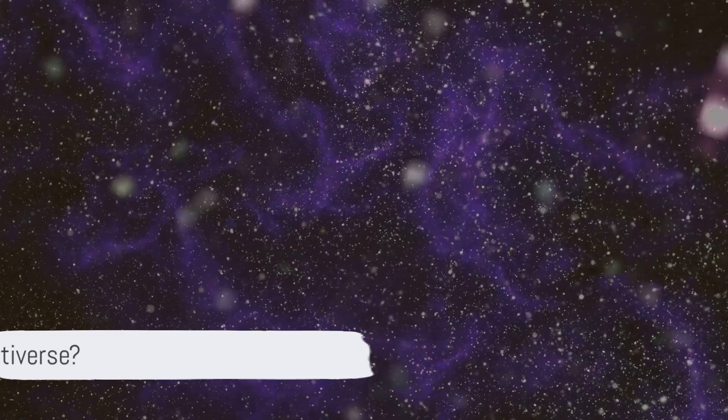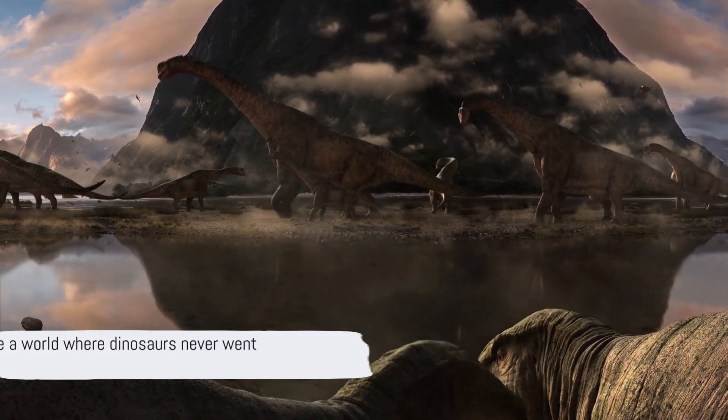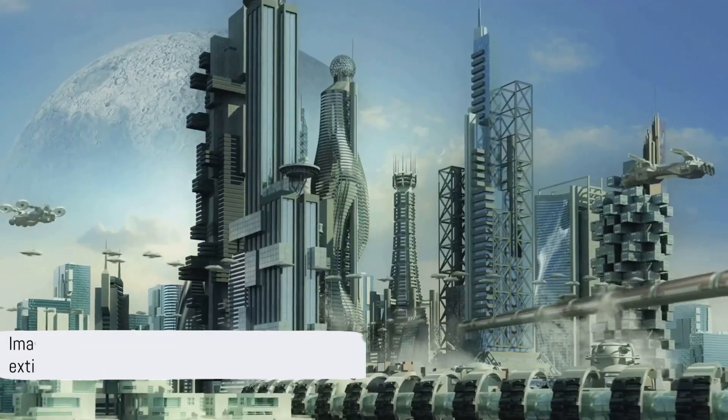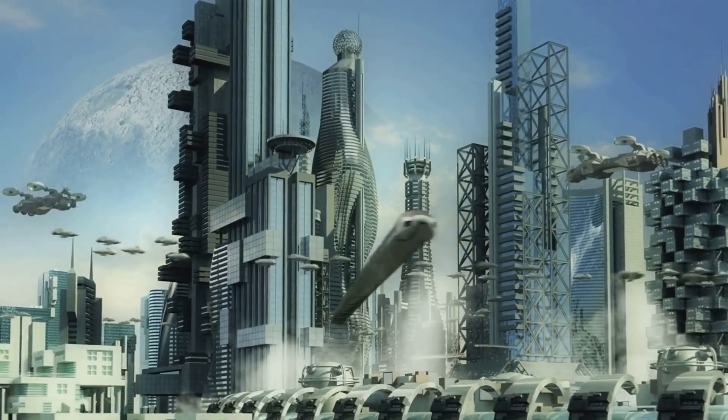The multiverse theory proposes that our universe is just a single bubble in a vast sea of countless universes. Each one may have its own unique rules of physics, histories, and versions of life. Imagine a world where dinosaurs never went extinct, or where technology is thousands of years ahead of ours.